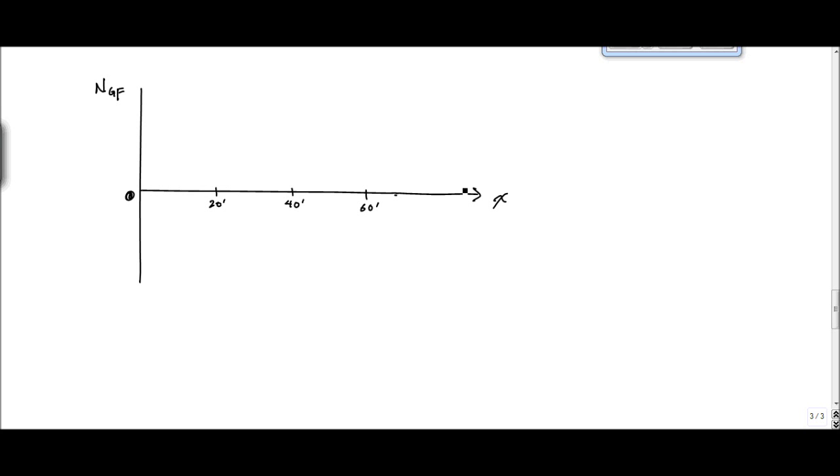At 0, when X equals 0, the NGF is 0. And then here, when X equals 20 feet, NGF is minus 0.77, so that's right here. And then when I'm at 40 feet, that's about half of that, so it's right about here. And then at 60 feet, the force in NGF is 0, and I draw my line. And then this should be a straight line that goes like this.